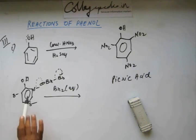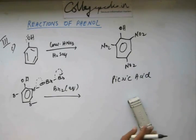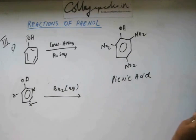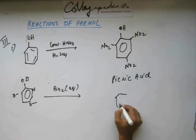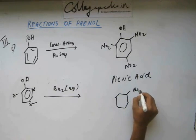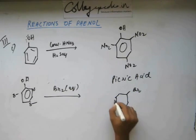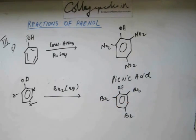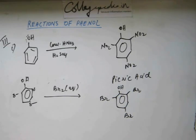Because this is an activated ring, reaction will take place from all three sides, and what you are going to get as your product is 2,4,6-tribromophenol. This is your product. Now, if you don't want three bromines to be added — if you don't want tribromination to occur — then we can make the system less polar.